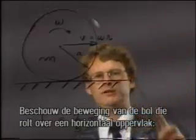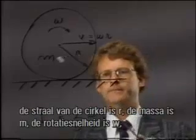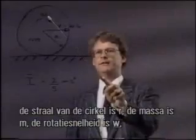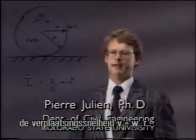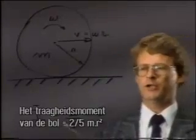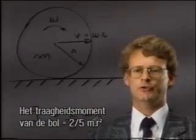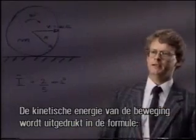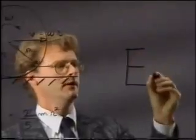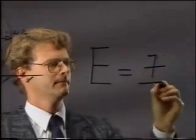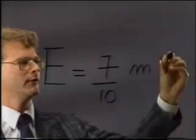Consider the motion of a sphere rolling on a horizontal surface. The radius of the sphere is r, the mass is m, the angular velocity omega, and the translation velocity v is equal to omega times r. The moment of inertia of the sphere is equal to two fifths of the product of the mass m and the square of the radius. The kinetic energy of the motion is given by the following formula: E is equal to seven tenths of the product of the mass times the square of the velocity.